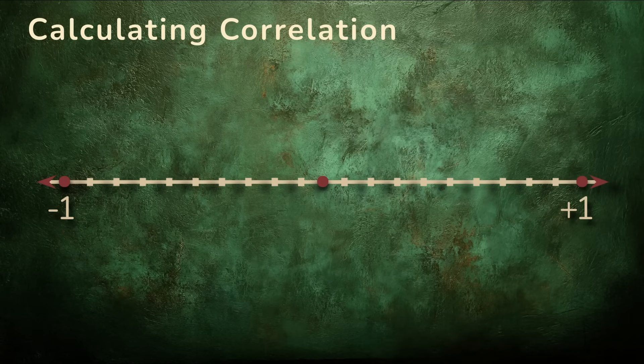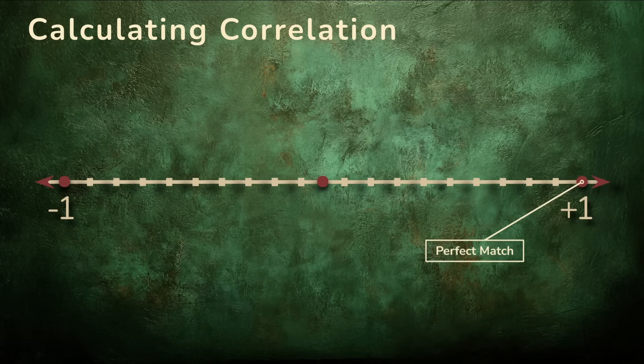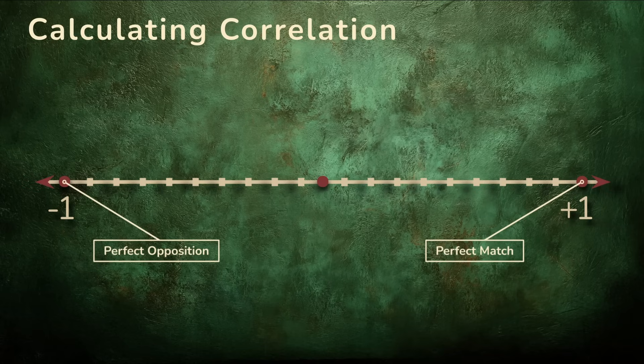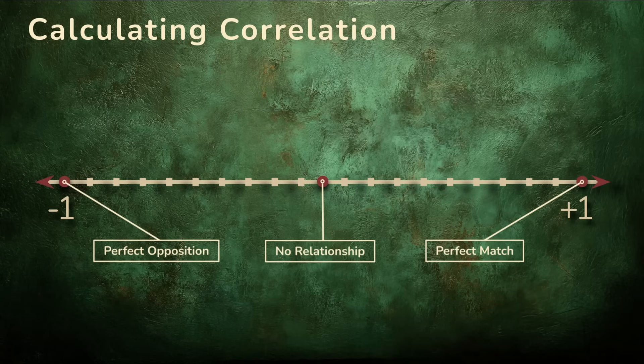A correlation of plus 1 means perfect agreement. The two sequences of data move in perfect alignment. When one goes up, the other goes up in perfect proportion. A correlation of minus 1 means perfect opposition. When one sequence rises, the other falls and vice versa. A correlation of 0 means no relationship. The two sequences are doing their own thing independently, indifferently, unpredictably.